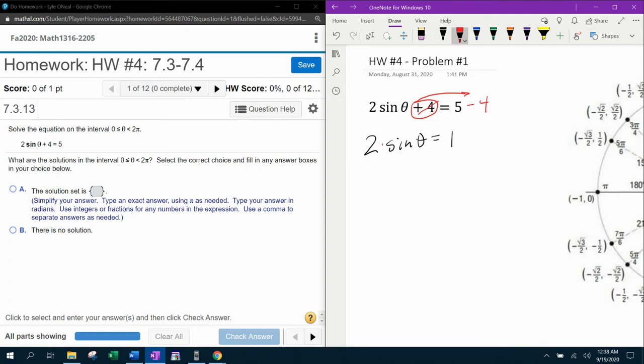Next step is to get rid of the coefficient of the trig function. So we're going to have to divide both sides by two. And that's going to give us sine theta equals a half.